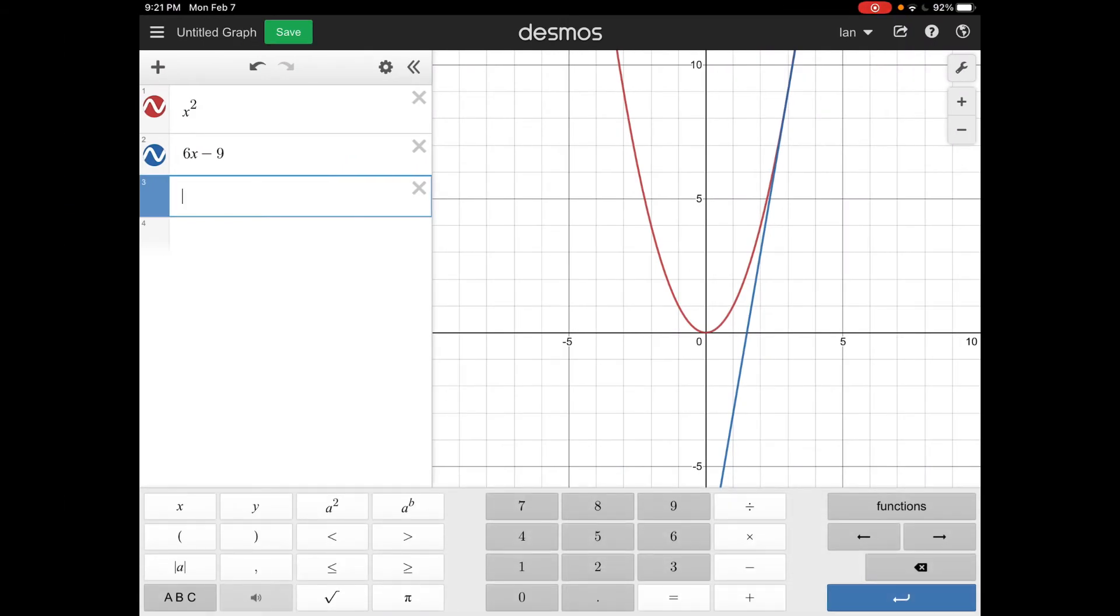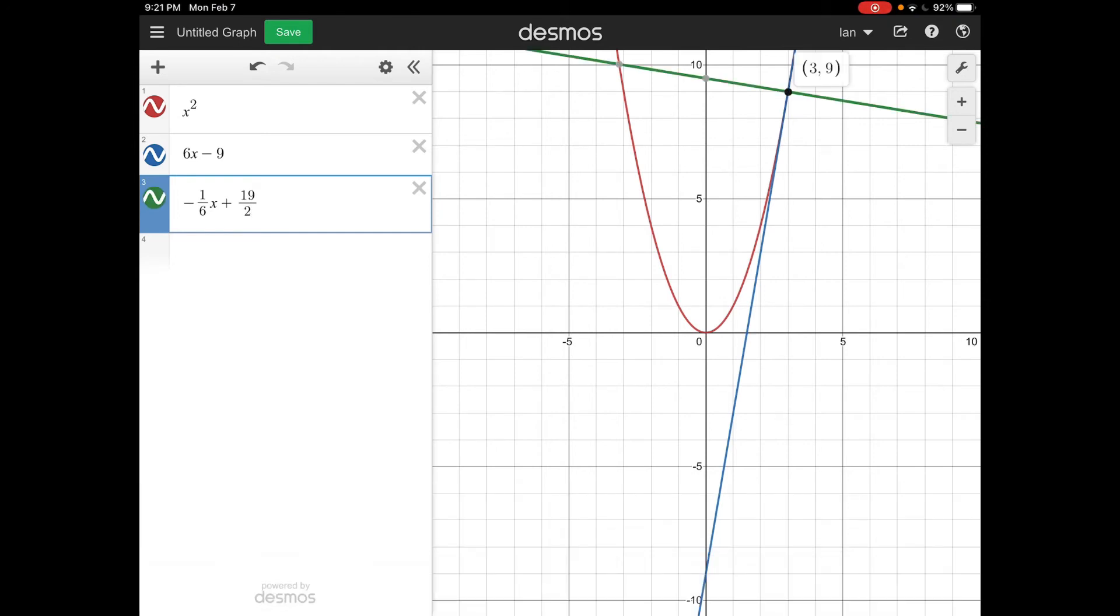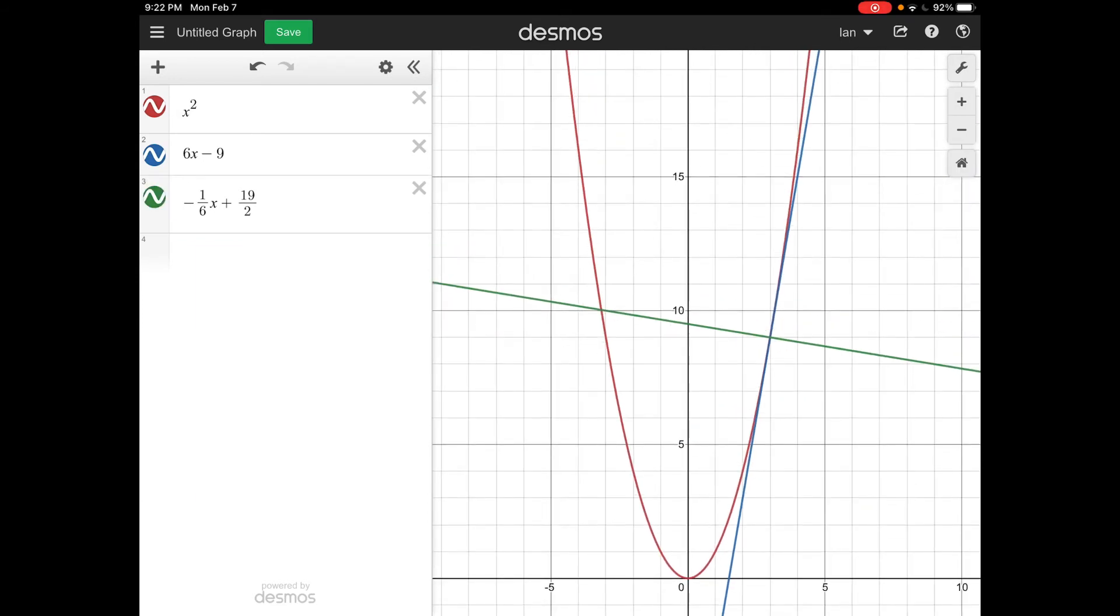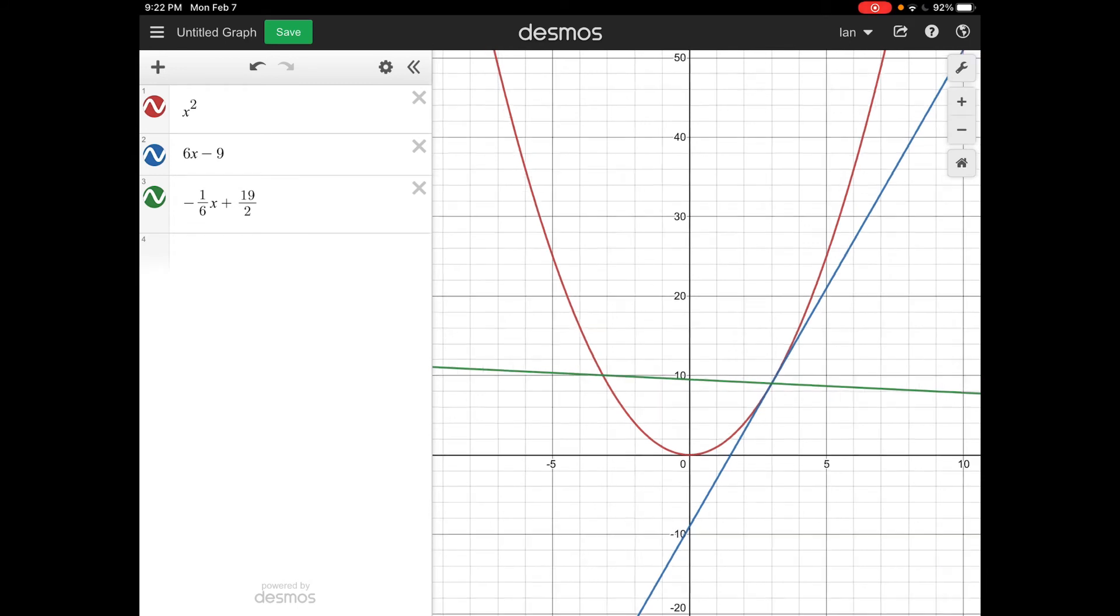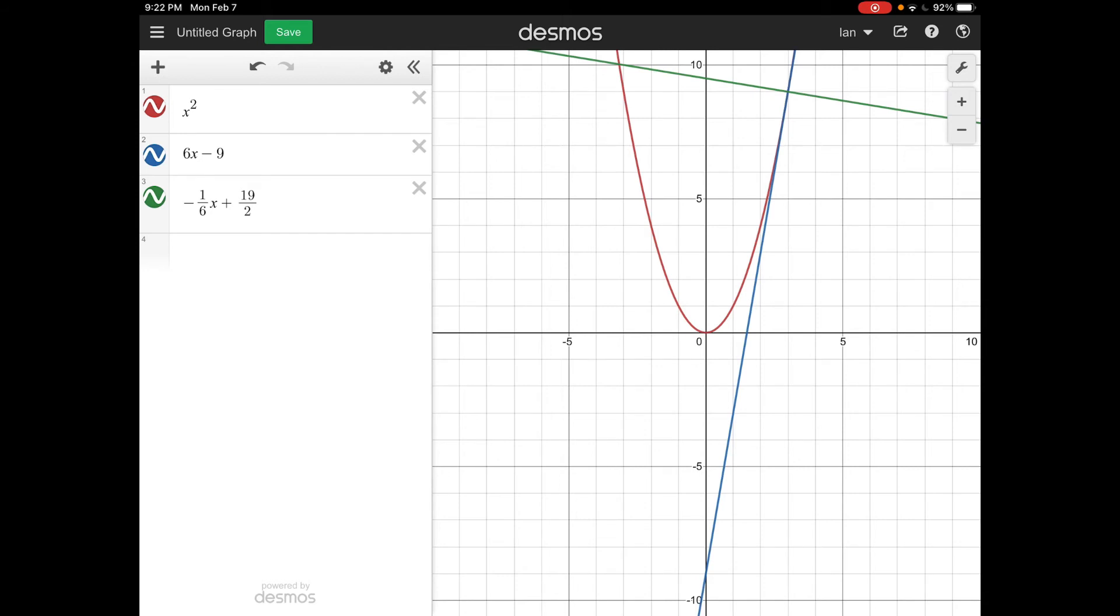Let's make sure that's actually the equation. So we've already got the curve and its tangent at x equals 3. Let's see if we put this in negative 1 sixth x plus 19 over 2 or 9.5. Yeah that looks like it goes through at 3, 9 as well. And it does look perpendicular. We're at a right angle to the blue one to our tangent. So that is what's going on here. We've got a tangent in blue and a normal in green.